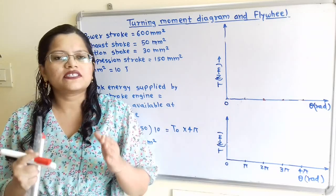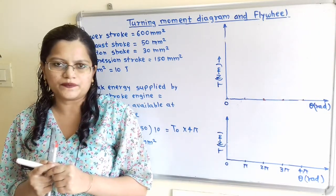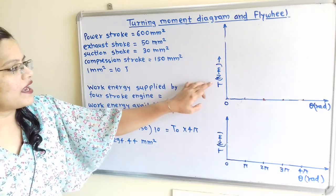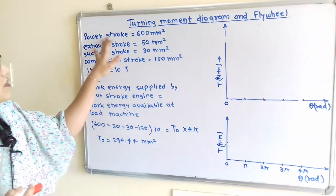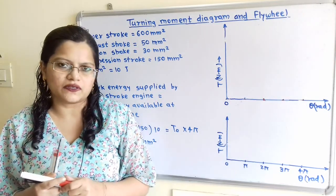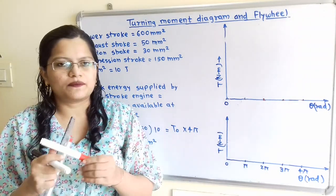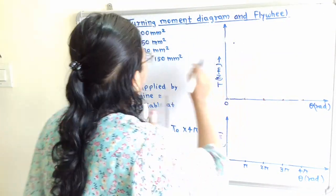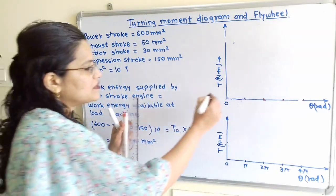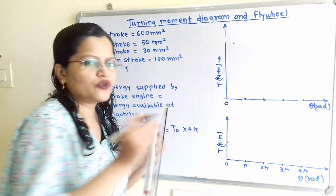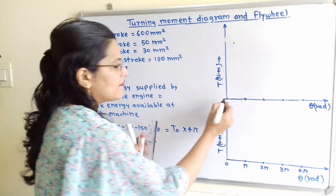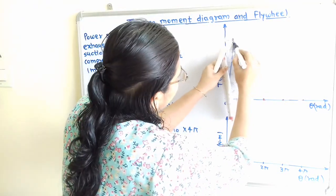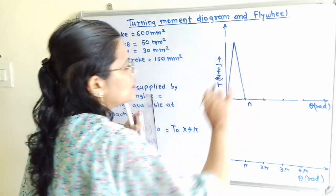The area for each stroke is in the form of a triangle, as mentioned in the question. On the horizontal axis we show crank angle theta in radians, and on the vertical axis torque in newton-meters. For the power stroke with area 600 mm², since work energy is developed, we show this triangle above the line. This stroke is completed during half a revolution, that means 0 to π. We take a particular distance and complete this triangle for 600 mm² area.